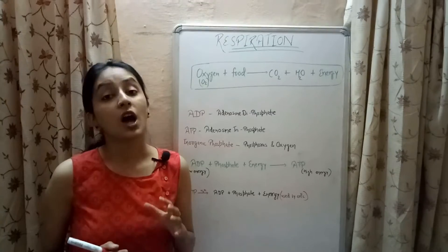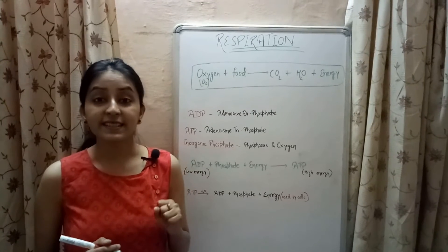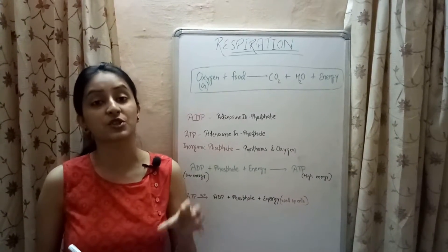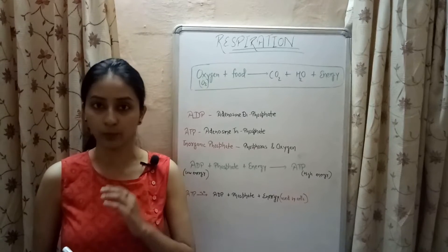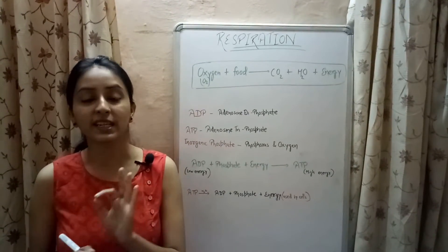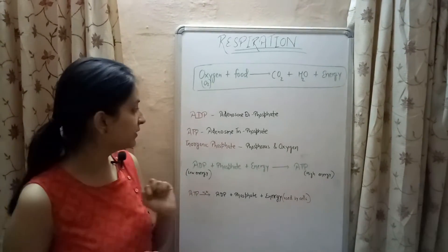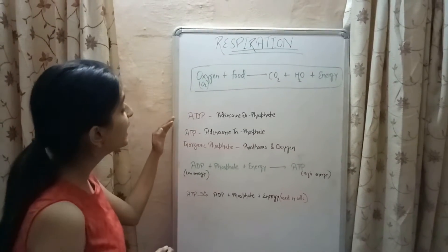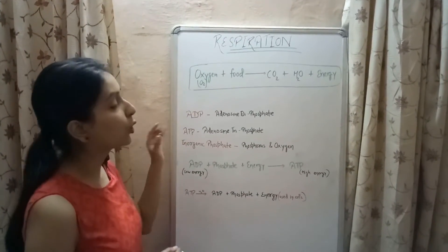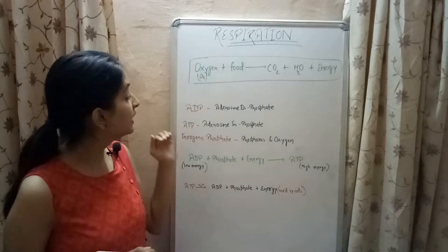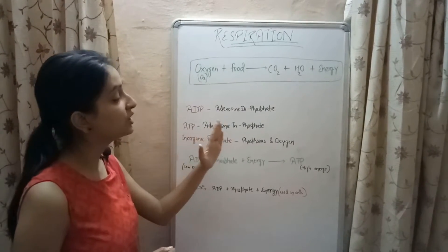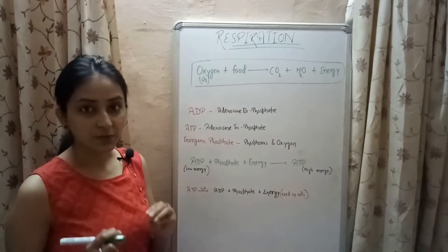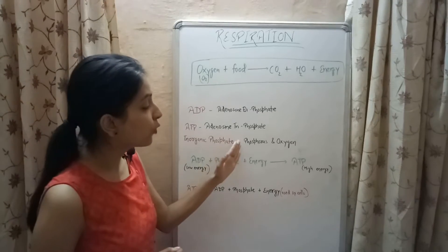Now let's see how the energy released by the oxidation of food during respiration is stored in our body. Before coming to this topic, let me explain three key terms: ADP, ATP, and inorganic phosphate. ADP stands for adenosine diphosphate, ATP stands for adenosine triphosphate, and inorganic phosphate is a substance containing phosphorus and oxygen.